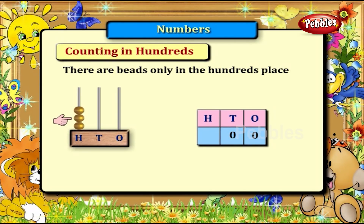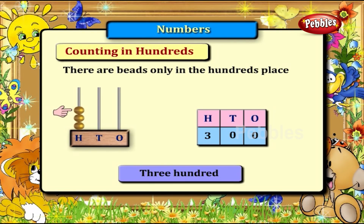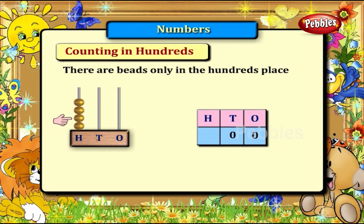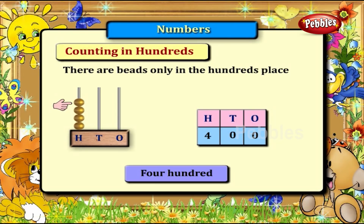For 300: 1, 2, 3 — three beads for 300. For 400: 1, 2, 3, 4 — four beads for 400.